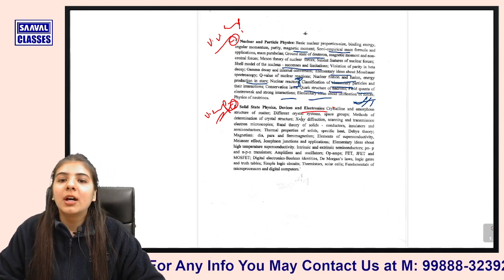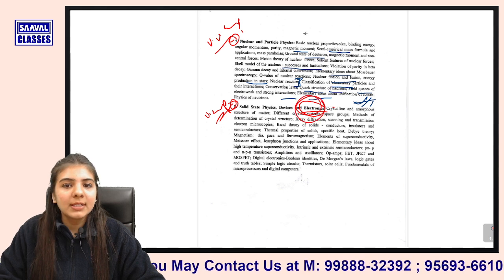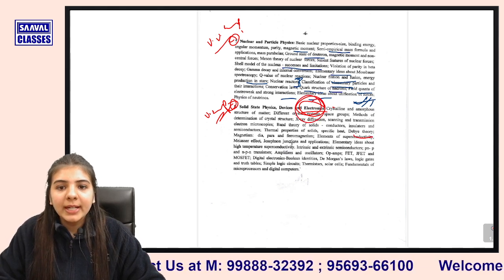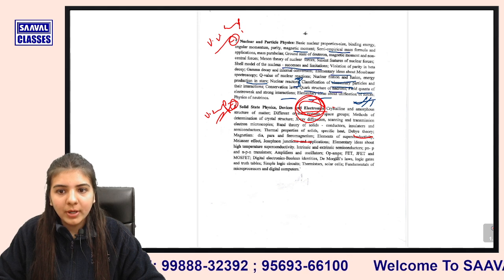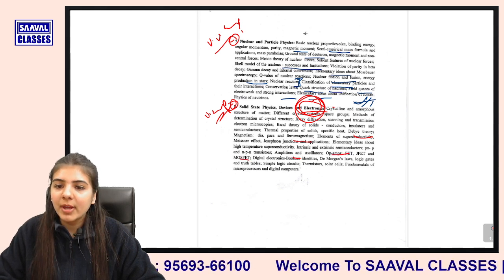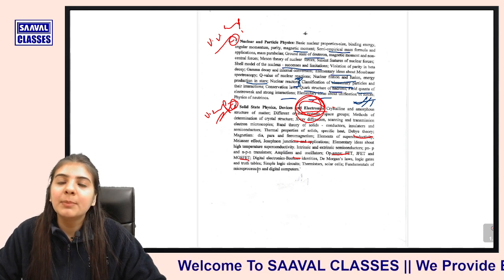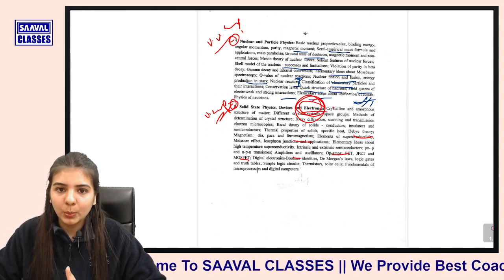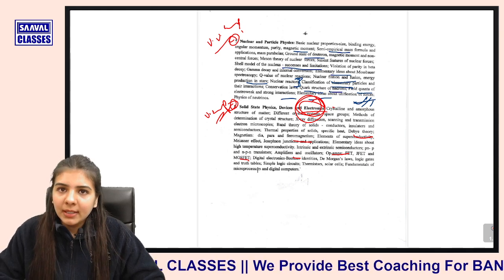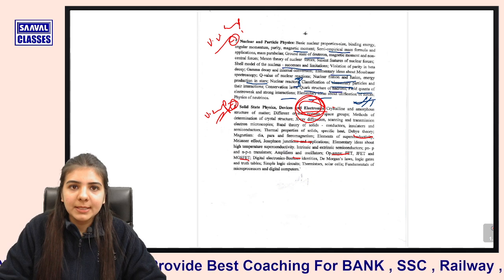Solid state और electronics की बात करें तो electronics एक बड़ी important book है। Debye theory, dielectric properties — इनसे भी question आया हुआ है। फिर op-amp, JFET, amplifiers, MOSFET — यह जो important topics हैं वो cover हो रहे हैं। तो यह हमारी जो भी books थीं, यह हमारा syllabus है।